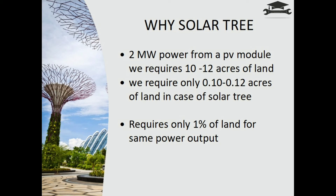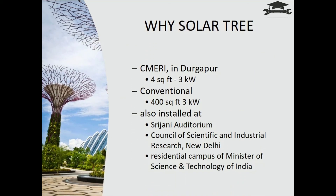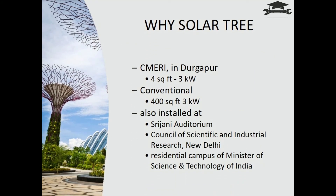Comparing with conventional solar panel systems, 2 megawatts of power from a conventional PV module requires 10 to 12 acres of land, while only 0.10 to 0.12 acres are required in the case of a solar tree — just one percent of the land for the same output. This creates better utilization of land and increased efficiency. In a country as populated as ours, the Central Mechanical Engineering Research Institute (CMERI) in West Bengal's Durgapur has designed a solar tree that takes up only four square feet of space and produces about 3 kilowatts of power — enough to power about five households. Conventional solar PV systems occupy 400 square feet of space to produce this amount of electricity.